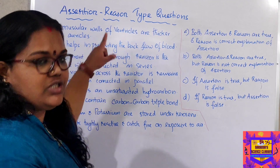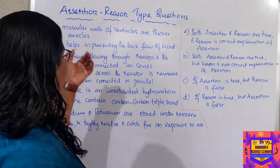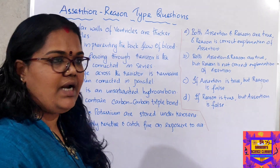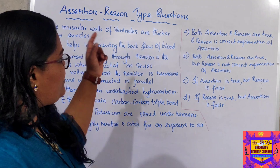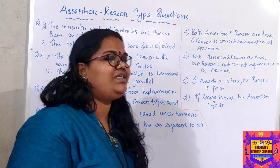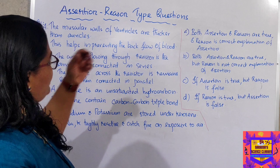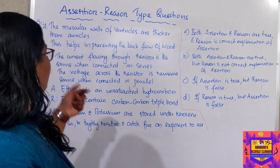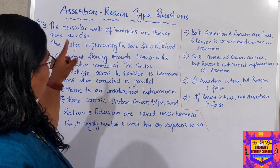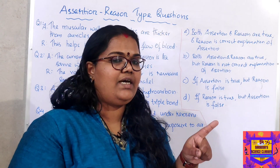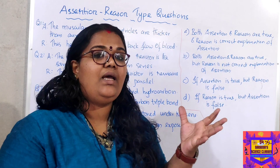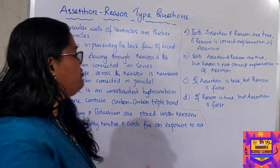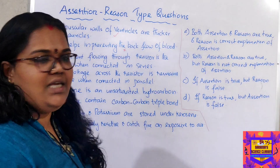Question number one — biology example. Assertion: the muscular wall of ventricles are thicker than auricles. Reason: this helps in preventing the backflow of blood. I have read the question properly. Now I think independently. Muscular wall of ventricles being thicker — that's what I'm checking. Then the reason: 'this helps in preventing backflow of blood.' Actually, the muscular wall helps in pumping, which is why the ventricle wall is thicker. It does not prevent backflow — that's the job of valves. So the reason is wrong.